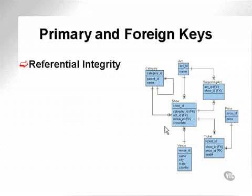There is an option on the delete command called CASCADE. What this will allow you to do is: if you try to delete a category record and entries exist in the show table, it will also delete the records from the show table containing that category ID. The same applies to child tables of the show table. It's very dangerous using the CASCADE command on the delete command — be very careful.